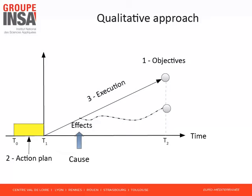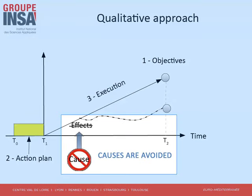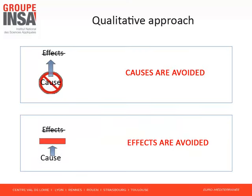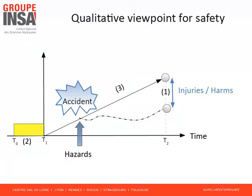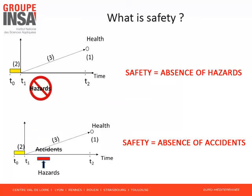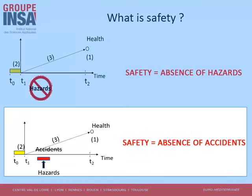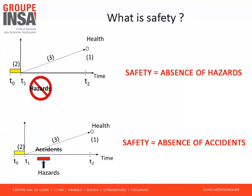When this viewpoint is considered, the risk management activity consists of identifying the risks, that is, the causes, the effects, and the cause-effect relationships. These risks can be controlled in two ways. First, identified causes are avoided; consequently, no effects will occur. Secondly, causes may arise but their effects are stopped. In these two situations, thanks to the risk controls, execution of the action plan cannot be disturbed and our objectives are achieved. When the objective is the preservation of health and environment, causes are called hazards. Effects on health are named injuries. Effects on the environment are called harms. Then the two previous risk controls lead to two definitions of safety. Firstly, safety is the absence of hazards. Secondly, safety is the absence of accidents. We are confronted with two definitions of safety requiring a strategic choice, that is, the absence of hazards or the absence of accidents.